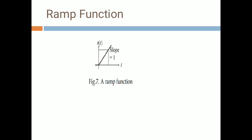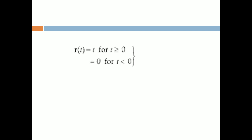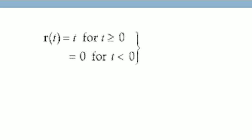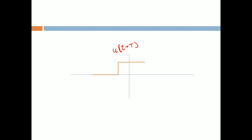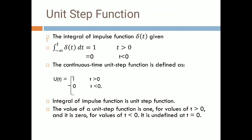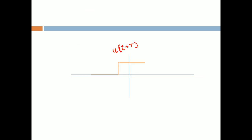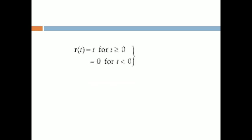The ramp function indicates signals that look like a ramp or sloping line. The equation for the ramp function is r(t) = t for t ≥ 0, and r(t) = 0 for t < 0. In the unit step function, when t > 0 it is 1 and when t < 0 it is 0, but in the ramp function, for t > 0 it equals t, and for t < 0 it is 0.